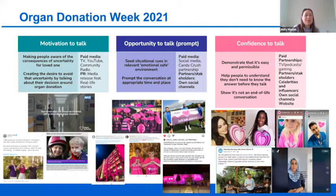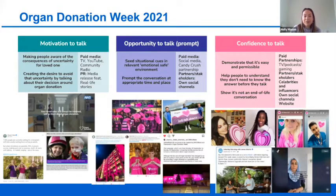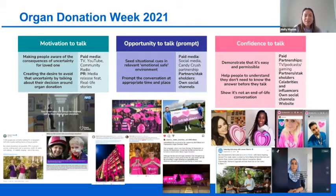Organ Donation Week is our key moment of the year, falling in September, when the whole organ and tissue donation and transplantation community comes together to celebrate the gift of life. The main objective was to encourage people to share their decision. Through PR and advertising we motivated people to talk to their loved ones through real-life stories. Across England our color for organ donation is pink, so buildings across the country lit up pink for organ donation week.